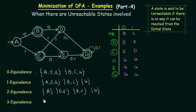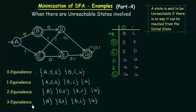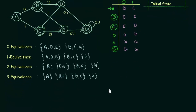For three equivalence, state A is not three equivalent to any of them, states D and E are three equivalent to each other, states B and C are three equivalent to each other, and state G is by itself. If you observe carefully, the rows of two equivalence and three equivalence yield the same result. Since they are the same, it is time to stop the procedure, and these are the states that we have to make in our minimized DFA.